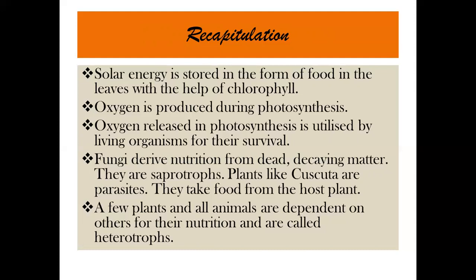Now do the quick revision of this chapter. Solar energy is stored in the form of food in the leaves with the help of chlorophyll. You have understood the process of photosynthesis. Oxygen is produced in great amount in the process of photosynthesis, and that oxygen is utilized by living organisms for their survival. Fungi derive their nutrition from dead and decaying matter — they are called saprotrophs. Plants like Cuscuta are parasites — they take food from the host plant. Those who depend upon others for nutrition are called heterotrophs.